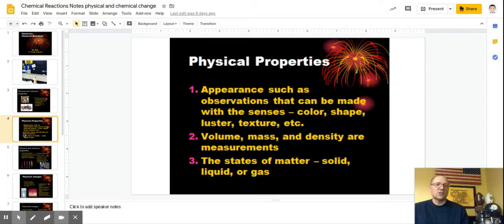Physical properties include things such as appearance, appearance such as observations that can be made with your senses, color, shape, luster, luster means shininess, texture, etc. It's also physical properties are things we can do with measurements, volume, mass, density, temperature, whether or not it's an insulator or a conductor, it's magnetic or not, all those things are measurements that we can make. And of course it's state of matter, solid, liquid, gas.